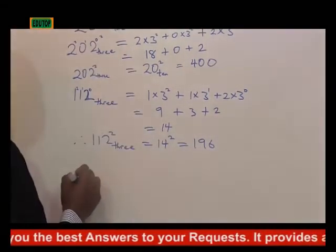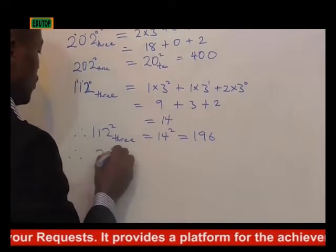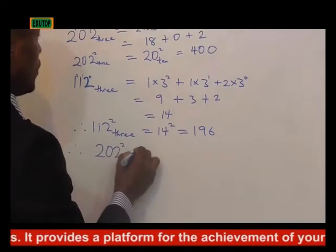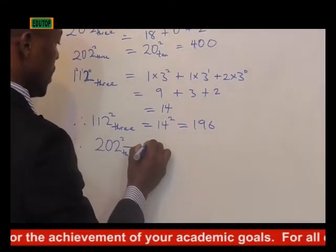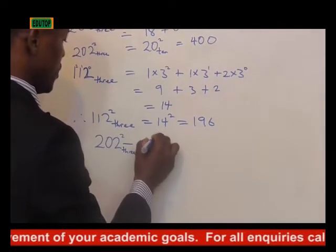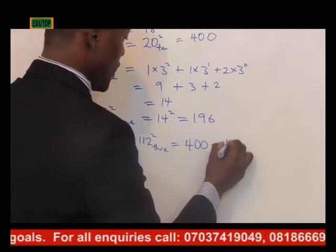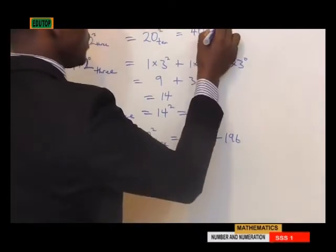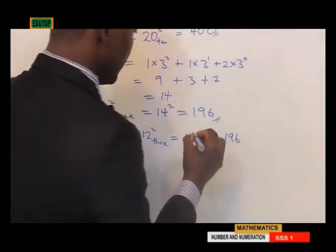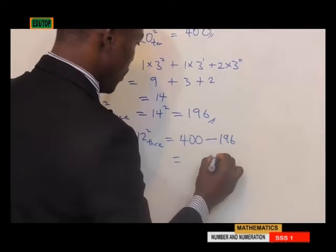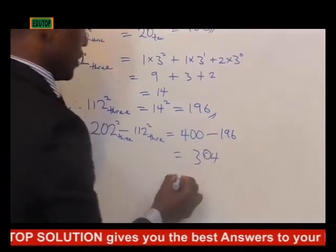Now the subtraction. Therefore, 202 base 3 squared minus 112 base 3 squared is equal to 400 minus 196. Remember, this is all in base 10, which gives us 204.